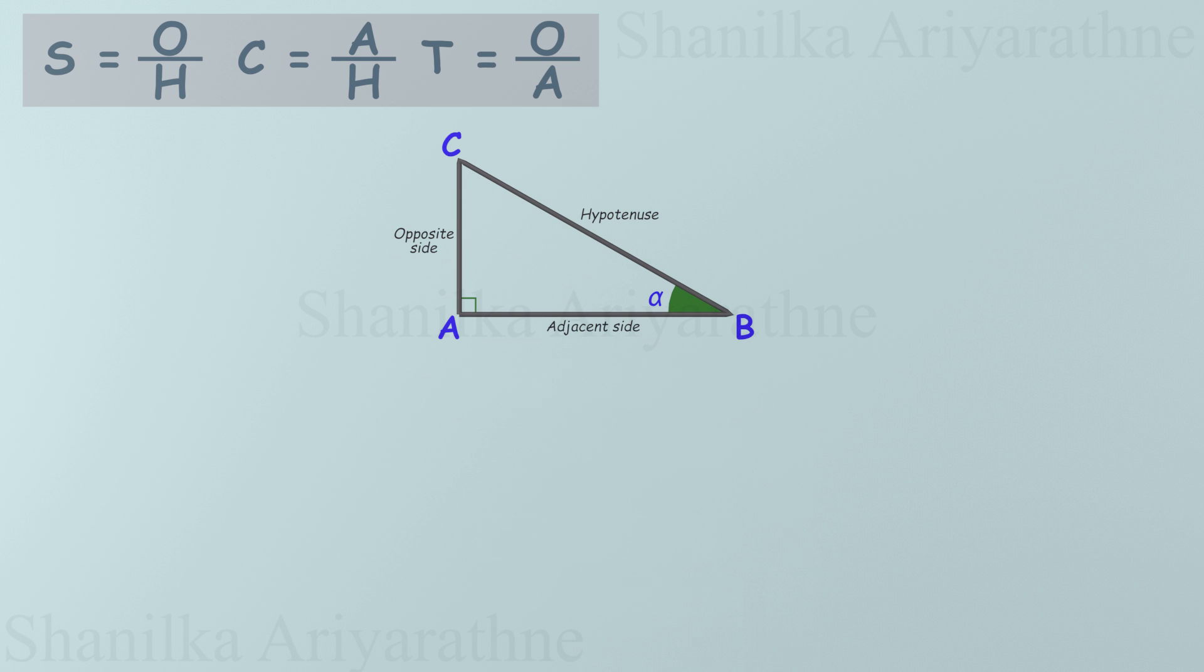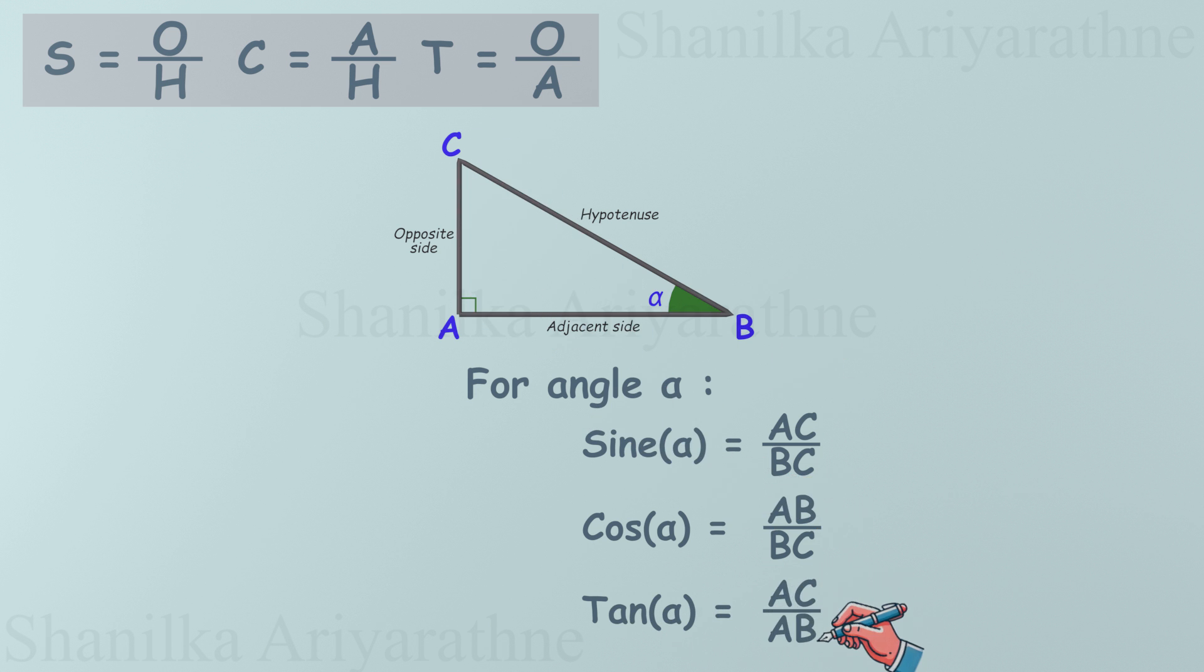Let's see an example. Let's break it down with a right-angled triangle labeled ABC, where BC is the hypotenuse. For angle alpha, sine of alpha: the opposite side is AC divided by the hypotenuse BC. Cosine of alpha: the adjacent side is AB divided by the hypotenuse BC. Tangent of alpha: the opposite side is AC divided by the adjacent side AB.